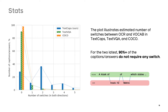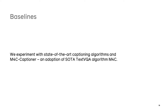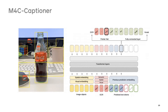We also evaluated the technical complexity of our data and showed that the majority of captions require at least two switches between OCR and vocabulary, which creates a significant difference with COCO and even TextVQA. We used our data to train and evaluate popular image captioning algorithms, as well as the top-performing TextVQA model M4C, which we adopted to our task.